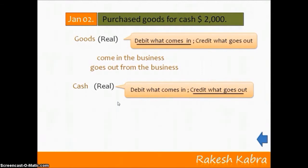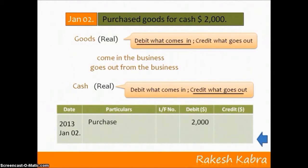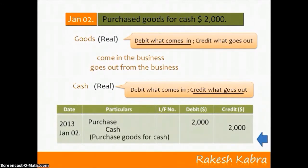Now let's pass the journal entry. We record the date: 2013, January 2nd. The debit item is Goods, but instead of opening a Goods account, we open a Purchase account to represent it. The amount $2,000 goes in the debit column. Then we record the credit item, the Cash account, and put the amount in the credit column. Narration: Purchase goods for cash.